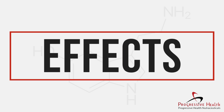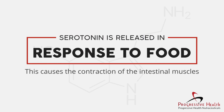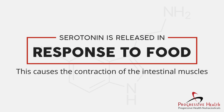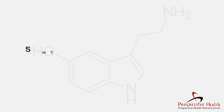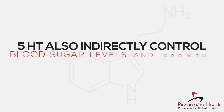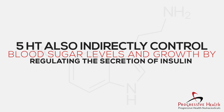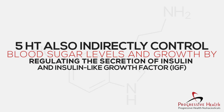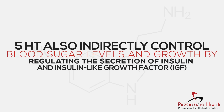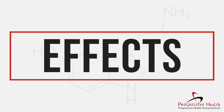Serotonin is released in response to food, causing contraction of the intestinal muscles. 5-HT also indirectly controls blood sugar levels and growth by regulating the secretion of insulin and insulin-like growth factor, IGF.